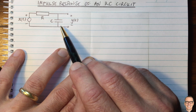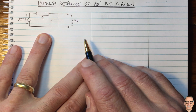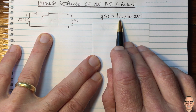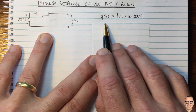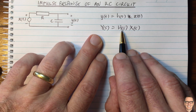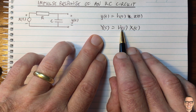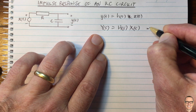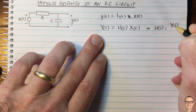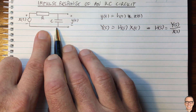We know that this is a linear time-invariant system, and for such systems the impulse response characterizes the system. So we need to find the impulse response. We know that the output equals the input convolved with the impulse response. Looking in the Laplace domain, we use the property that the output equals the multiplication of the input with the system response — which is the Laplace transform of the impulse response. This implies we can divide both sides by X(S), so the system response equals the Laplace transform of the output divided by the Laplace transform of the input.